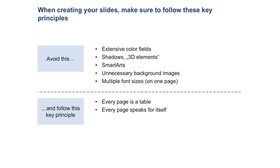So what are the things you should do — what principles should you follow? Here are two principles I'd like to present to you. The first is 'every page is a table' and the second is 'every page speaks for itself.' On the first one, just to quickly introduce the concept: always think about the page as a table. For instance, this example page could be thought of as a table with two columns — a title column that introduces and names the things you want to talk about, and a detail column that gives specifics.